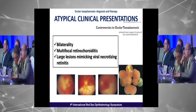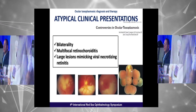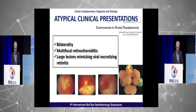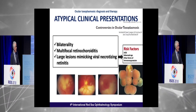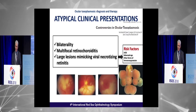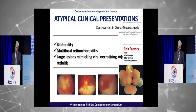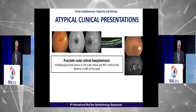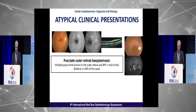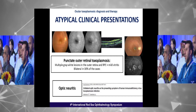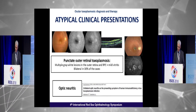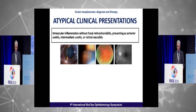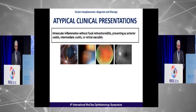Regarding atypical clinical presentation: clinicians should be aware of atypical forms of ocular Toxoplasmosis, including bilaterality, multifocal retinochoroiditis, and large lesions that may mimic viral necrotizing retinitis. Risk factors for such atypical presentation include patients with AIDS, advanced age, or other forms of immune suppression. Other atypical presentations include punctate outer retinal Toxoplasmosis, optic neuritis without visible lesion, and intraocular inflammation without visible lesion presenting as anterior uveitis or intermediate uveitis. Retinal vasculitis alone is very uncommon in Toxoplasmosis.